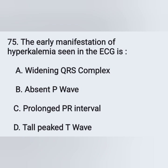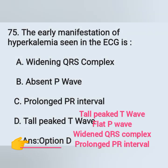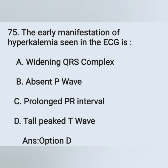Question 75: The early manifestation of hyperkalemia seen on ECG is: Option A: Widening QRS complex, Option B: Absent P wave, Option C: Prolonged PR interval, Option D: Tall peaked T wave. ECG changes in hyperkalemia include tall peaked T waves, flat P waves, widened QRS complex, and prolonged PR interval. The normal serum potassium level is 3.5 to 5.1 mEq/L.